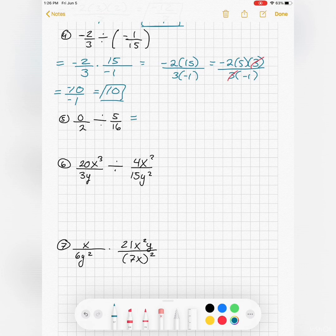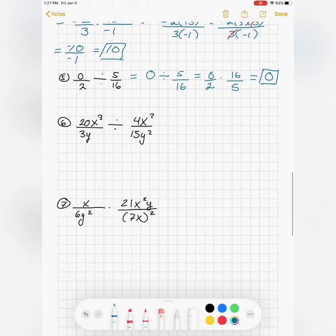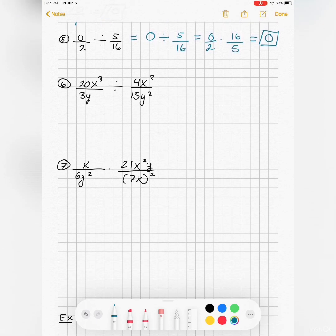This is a special one because remember 0 divided by any number is 0. So if I have 0 divided by 2, I just have 0. So 0 divided by 5 over 16 is 0. If I wanted to show that, I'd say the first fraction stays the same, second fraction flips, and I multiply straight across. But 0 times 16 is 0. So if I have 0 in the numerator, the result is just going to be 0.